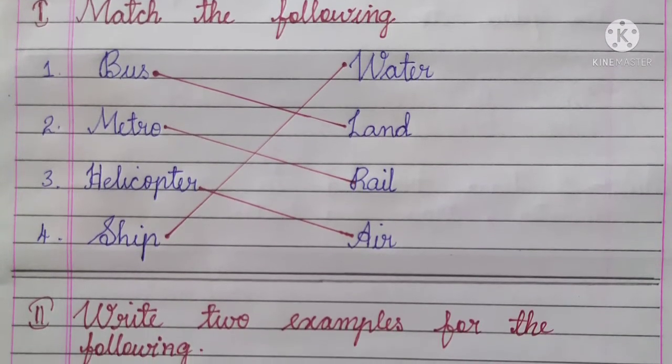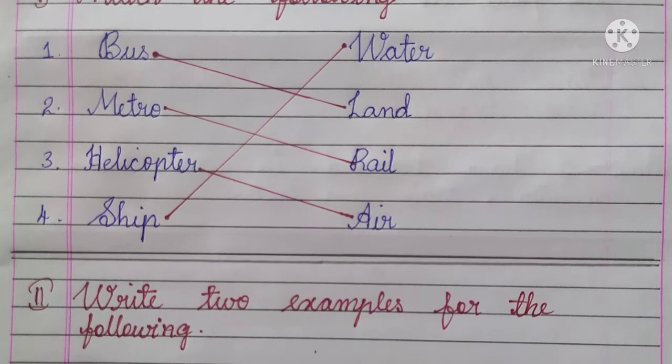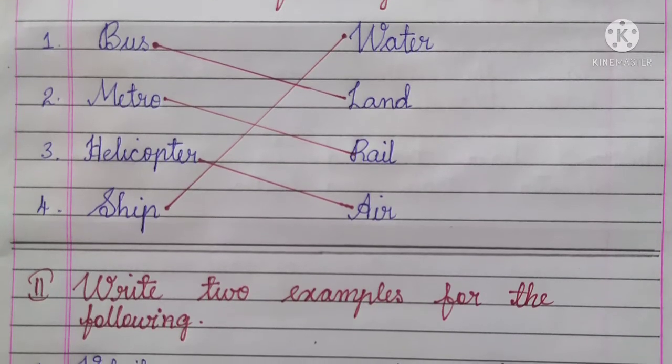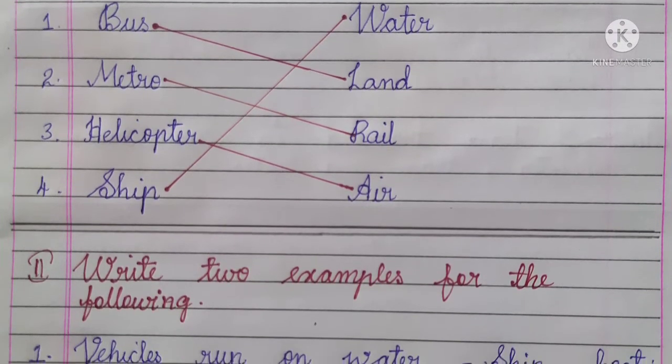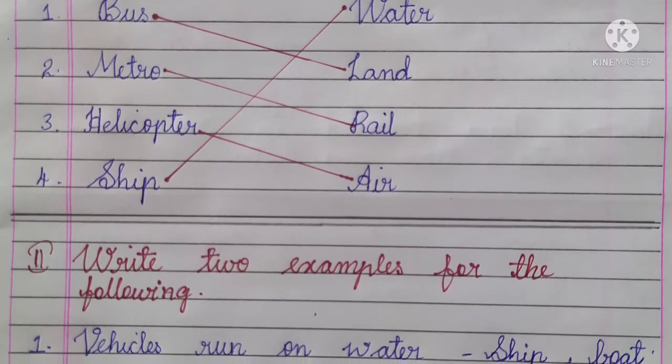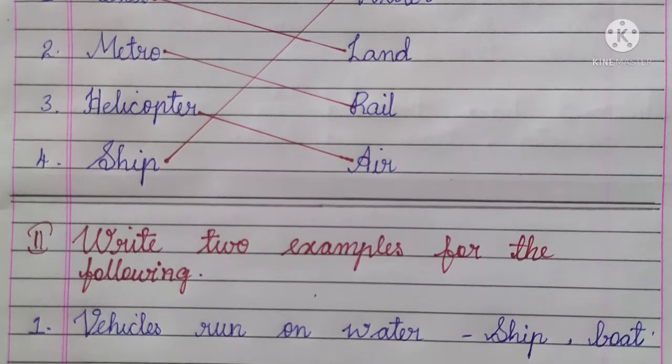First main: match the following. Bus — land. Metro — rail. Helicopter — air. Ship — water.